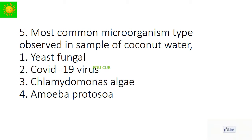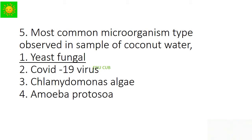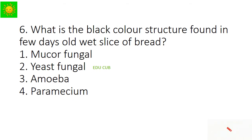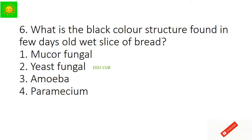Question 5: What is the most common microorganism type observed in a sample of coconut water? The answer is fungal. Question 6: What is the black-colored structure found on a few-days-old wet slice of bread? You can find Mucor — the fungal variety called Mucor.